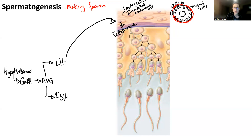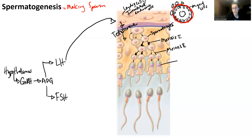Testosterone is going to be released into the seminiferous tubule, where it will target the spermatocytes. The spermatocytes go through the process of meiosis — meiosis one and meiosis two — to create sperm. So testosterone is essentially going to help with the development of sperm.